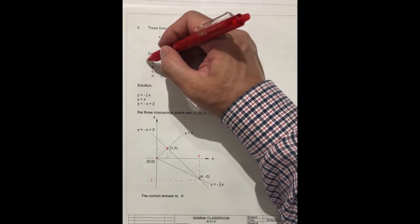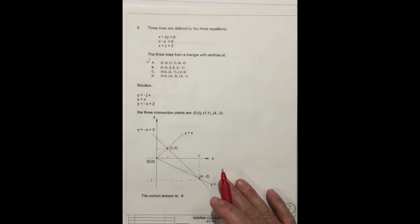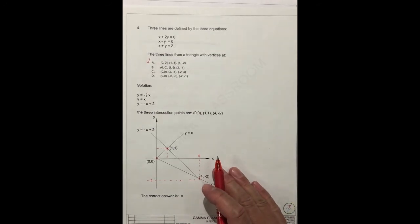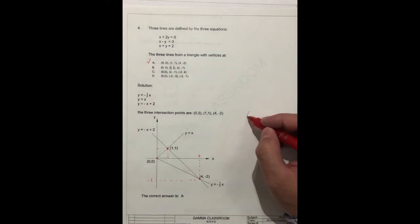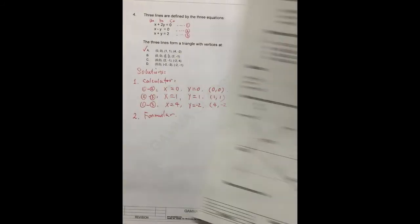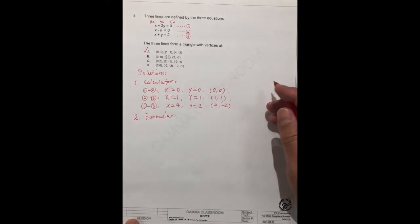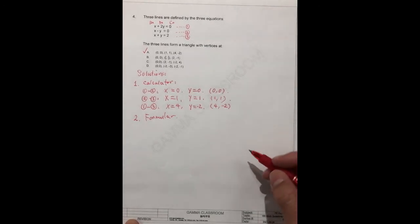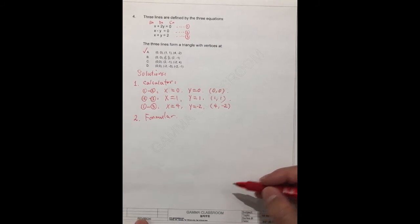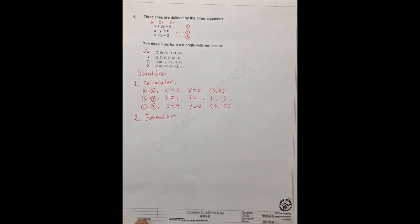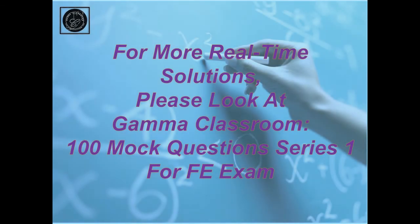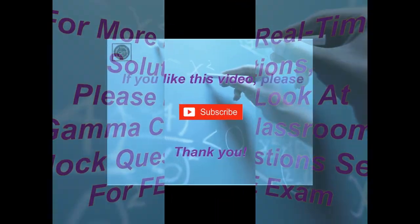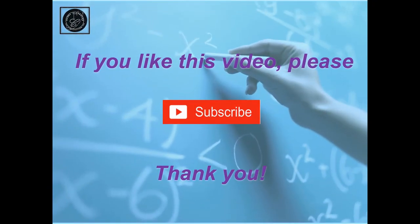But this way, you need to spend a lot of time, and then big chance to make a mistake. So this is not a good way. The first one is a good way. Use the calculator. You can do and you can get confidence. This is 100% correct. So this is number four. Thank you.